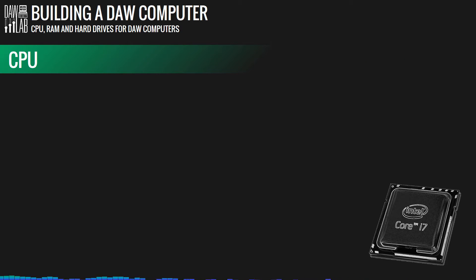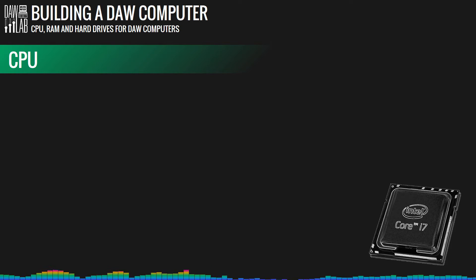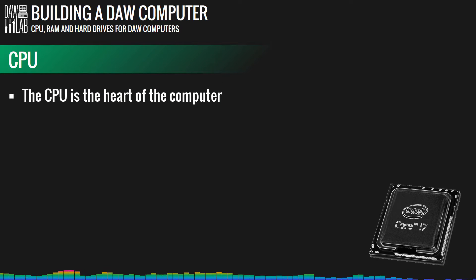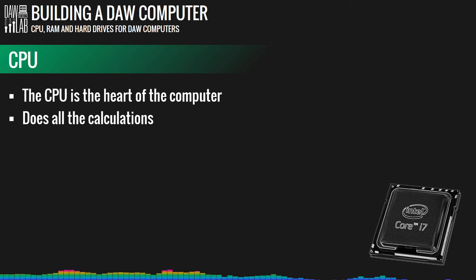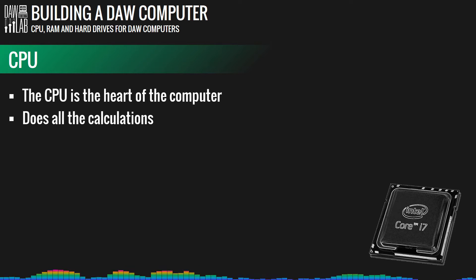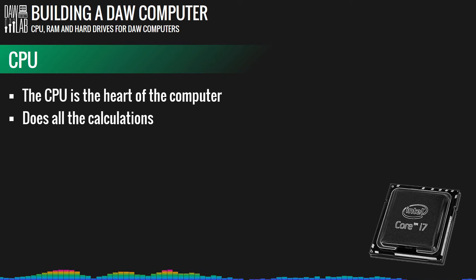The CPU is the basis of all operations — everything calculated in a computer is done in the CPU, so in simple terms you might refer to it as the heart of the computer. Since the CPU requires a certain chipset for the motherboard, it's a crucial step to pick the right one. Also, most CPUs only support a maximum of either 16, 32, or 64 GB of RAM, so if you want to upgrade your RAM later you need to make sure your CPU supports that amount.